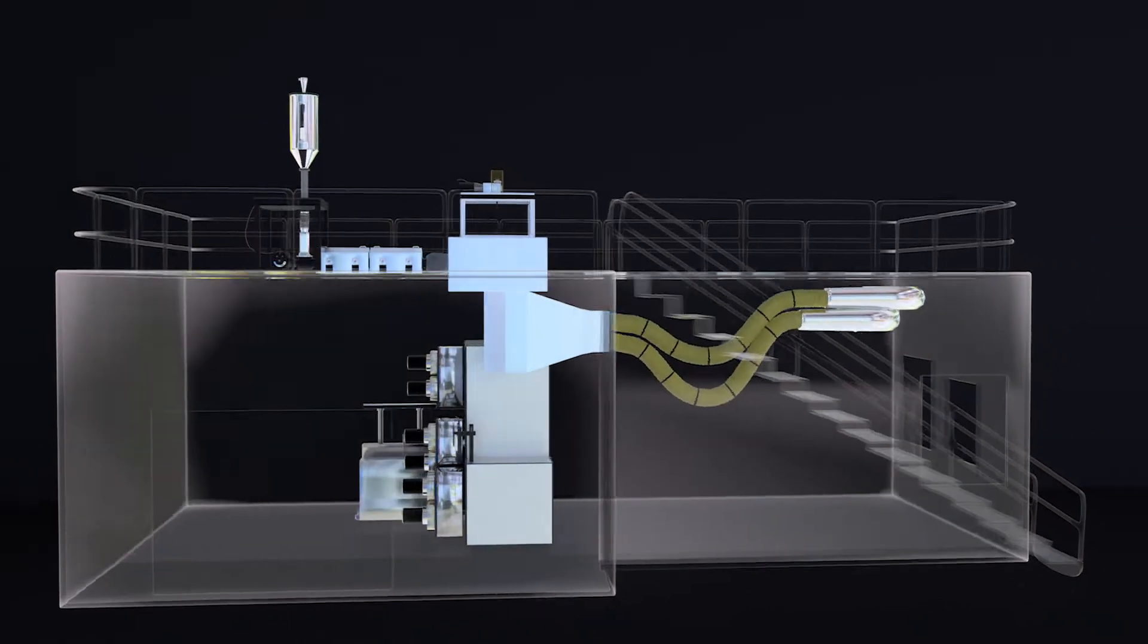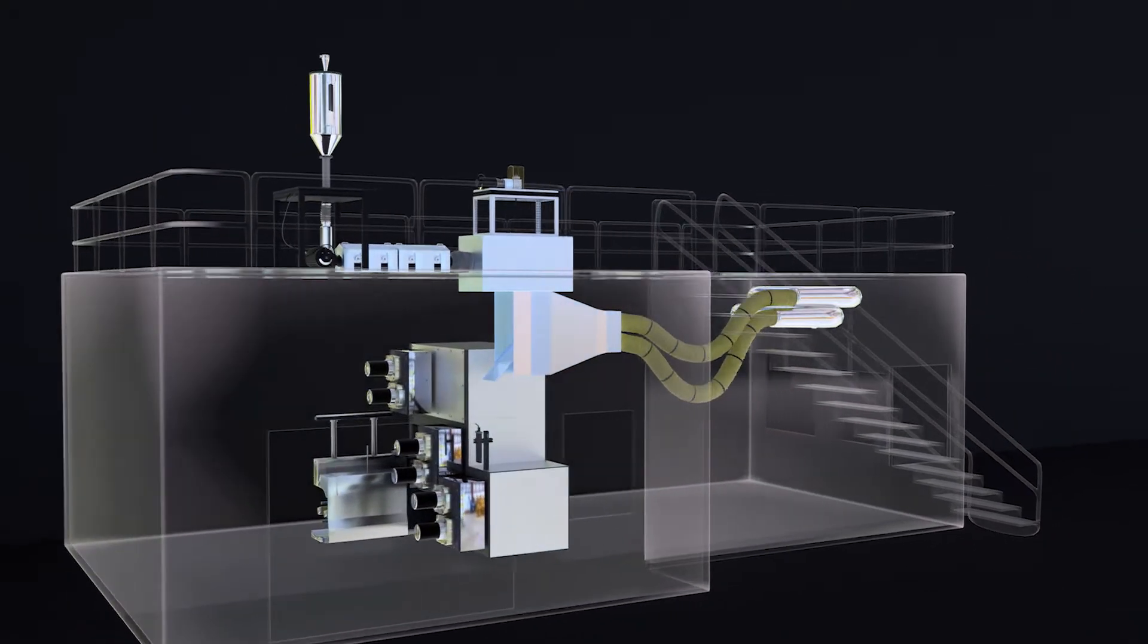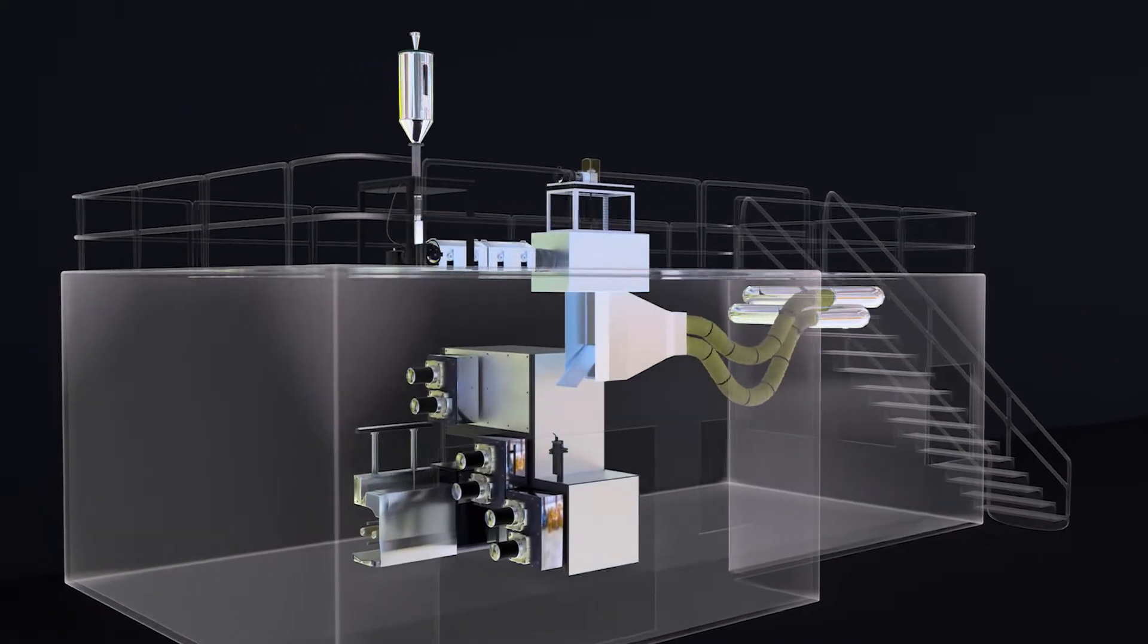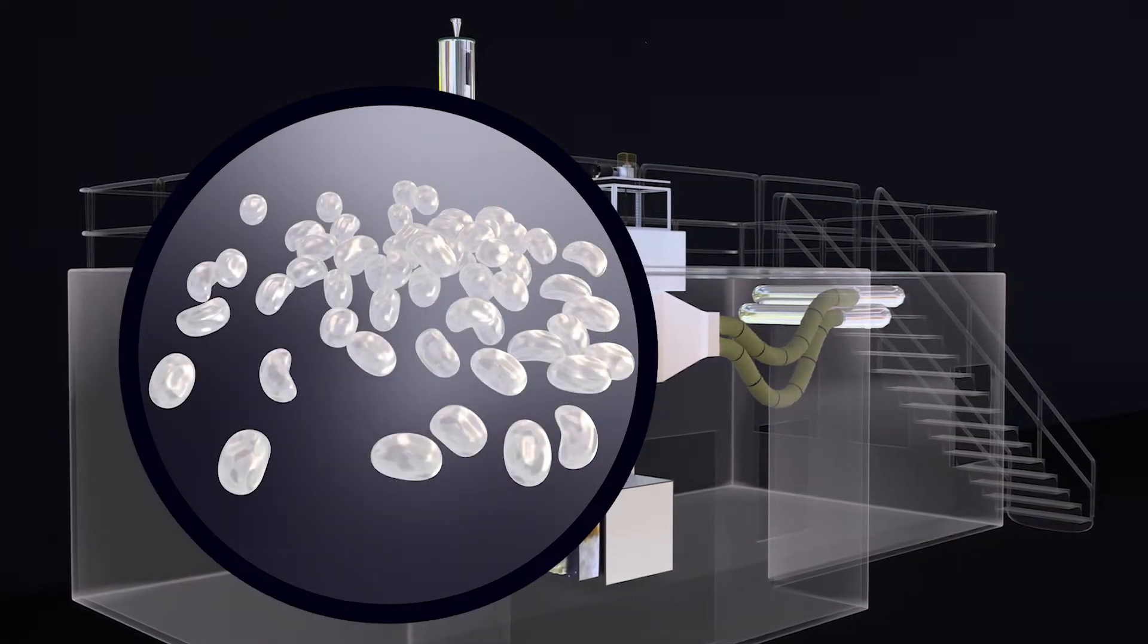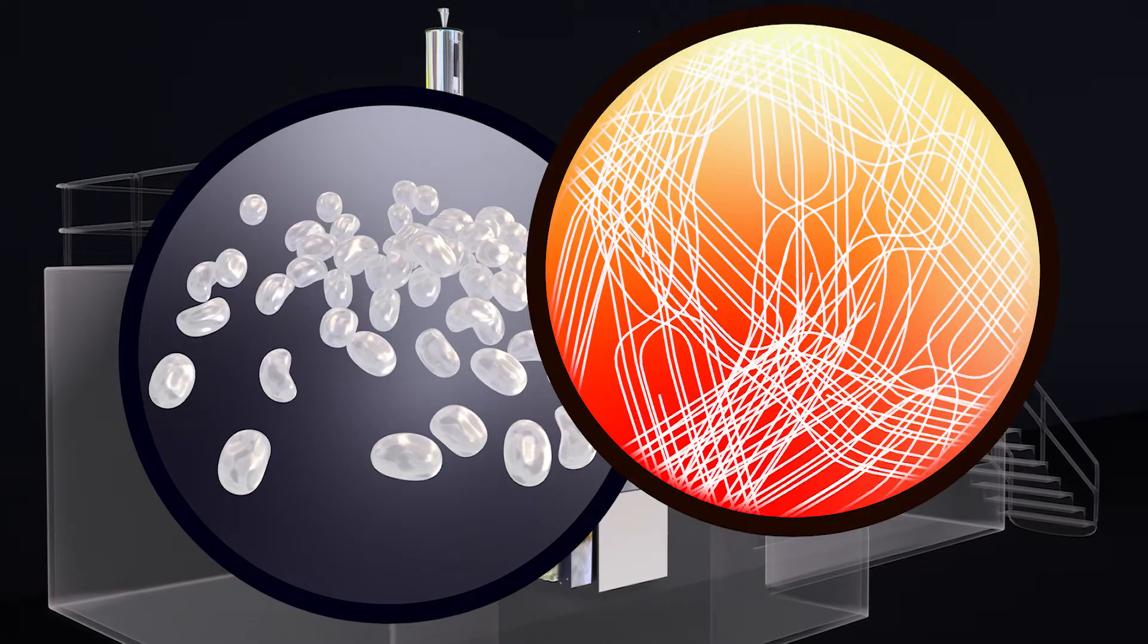Melt spinning is a convenient and cost-effective way to manufacture a variety of precursor fibers at an industrial scale. One example is polyethylene, a strong, lightweight polymer with random molecular structure.